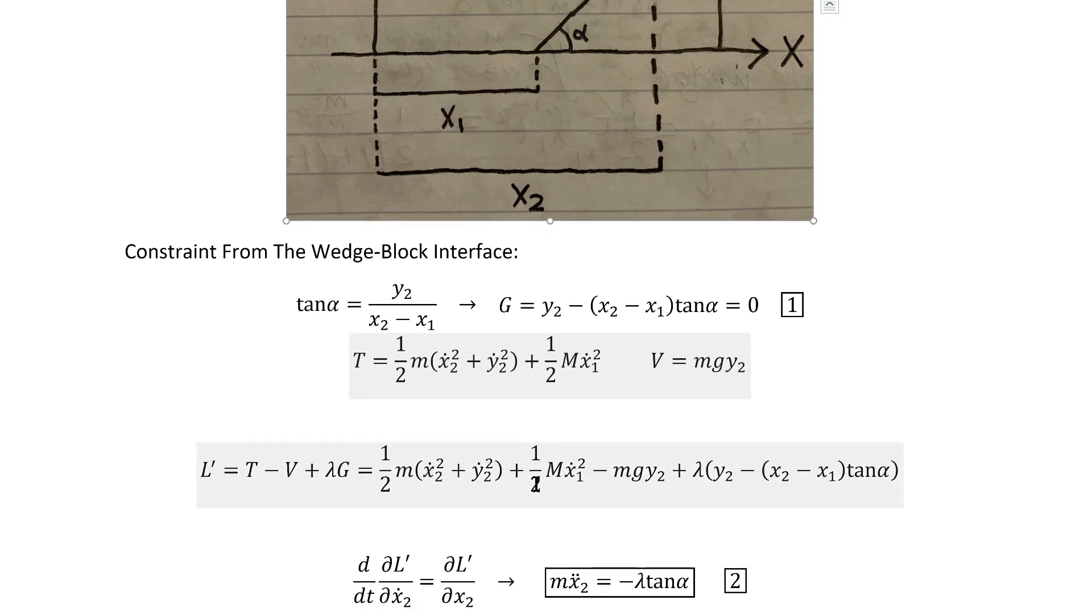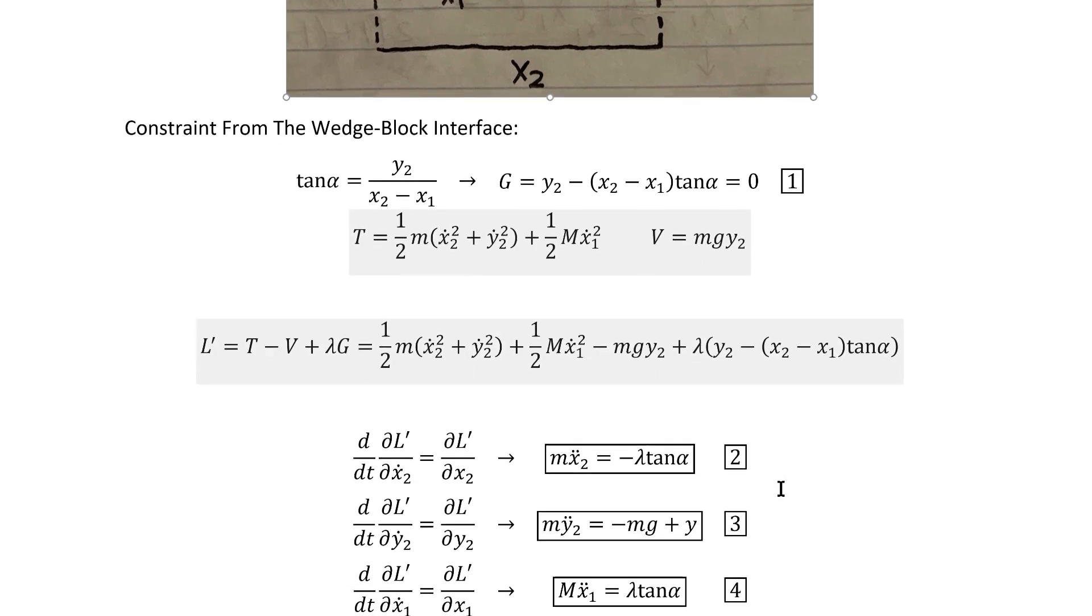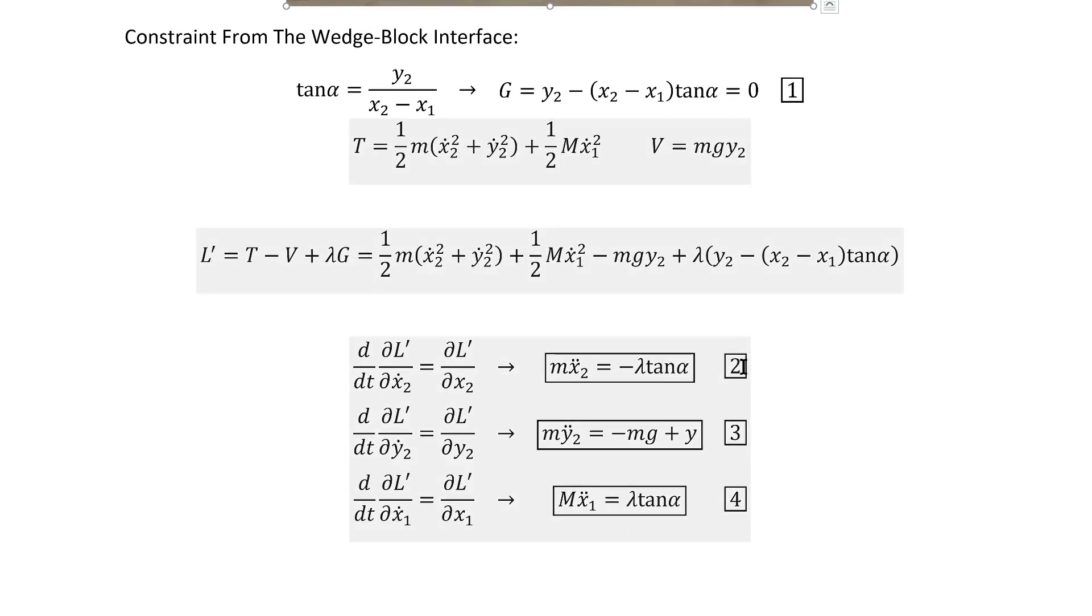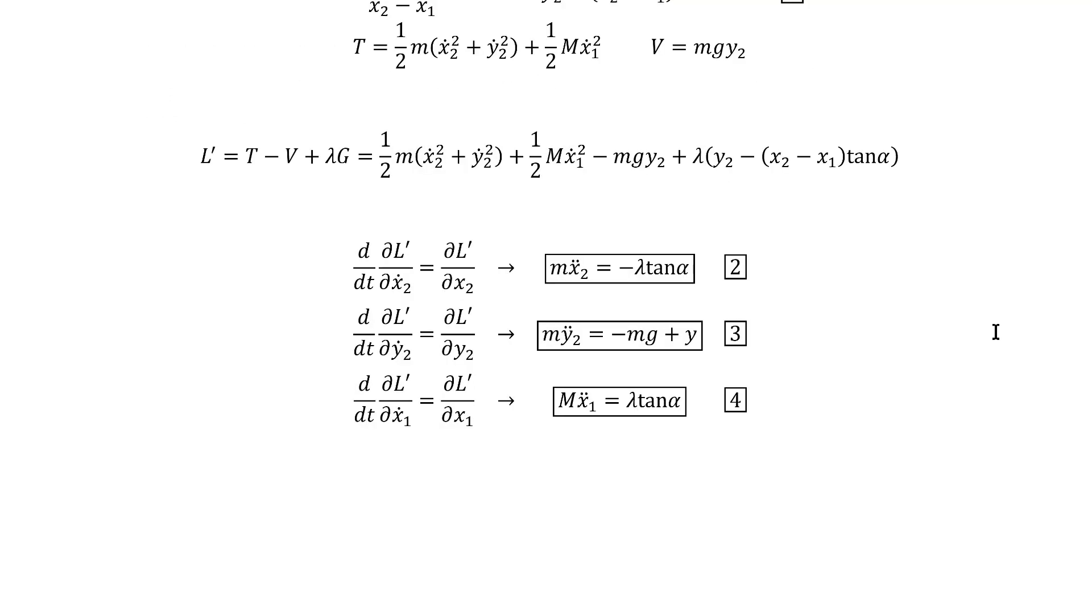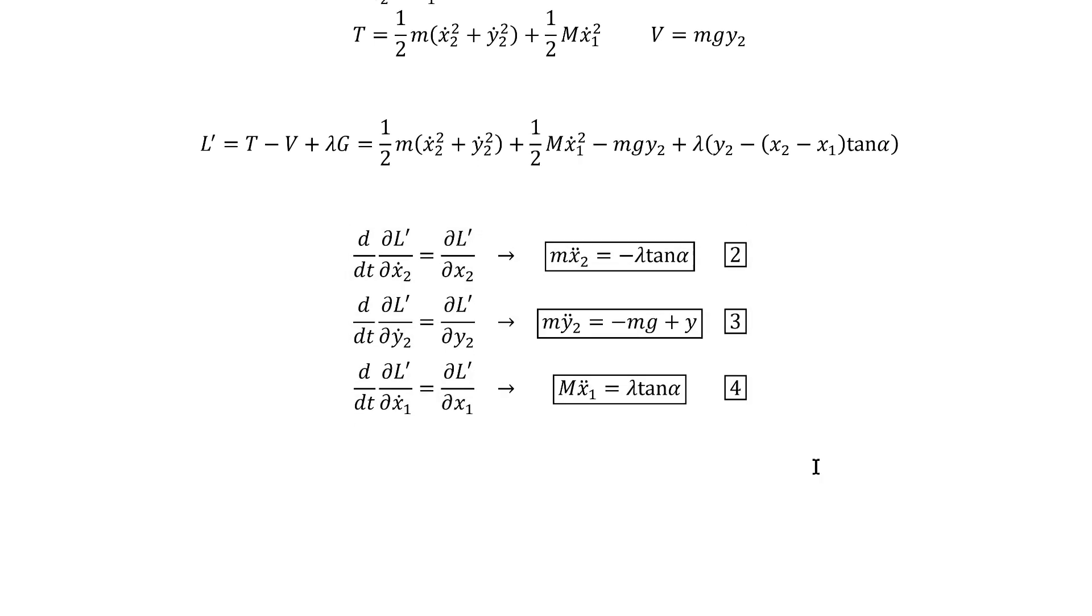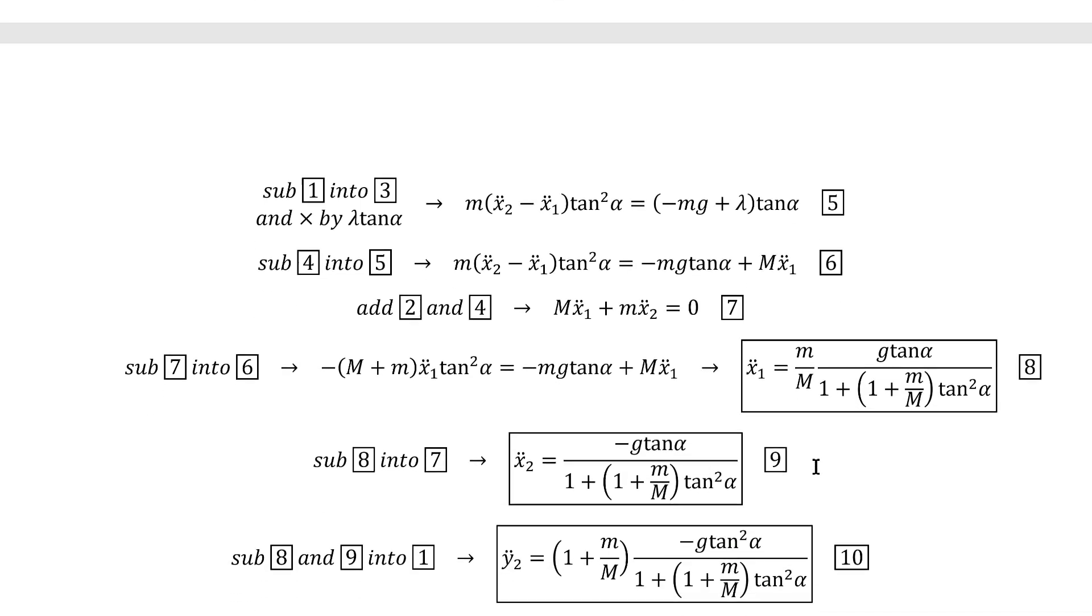The Lagrange multiplier augmented Lagrangian then takes on this form. We can calculate the corresponding equations of motion. As is usual for the Lagrange multiplier technique, if we then combine this with the constraint equation, we've got four equations and four unknowns: the three degrees of freedom and the Lagrange multiplier. We can then solve them all out.